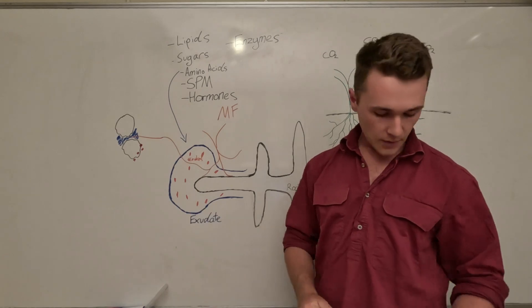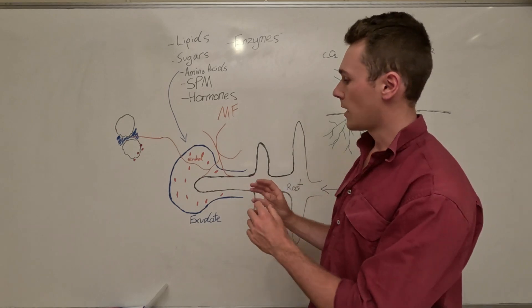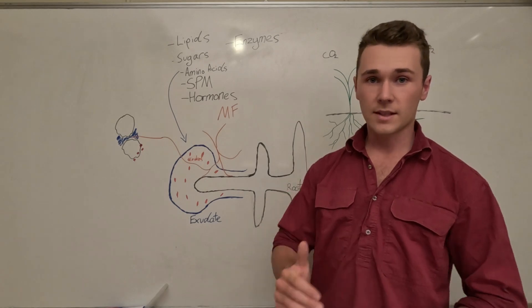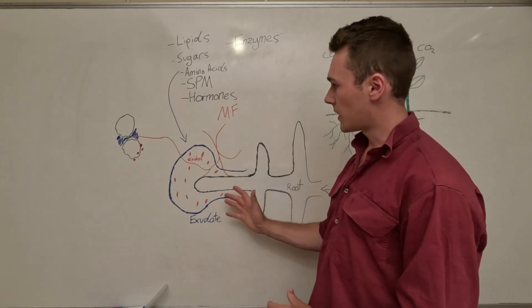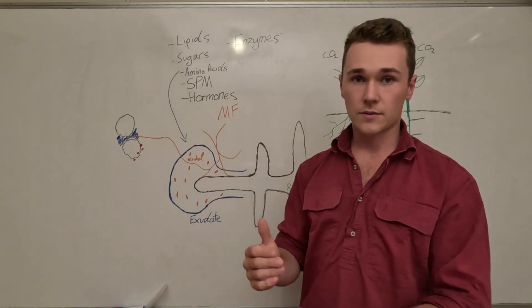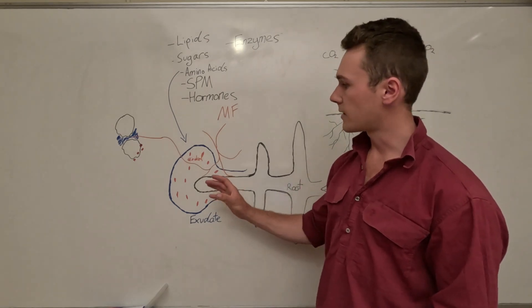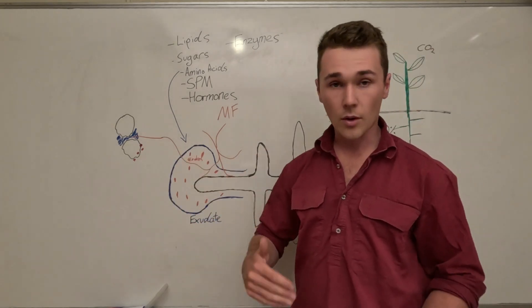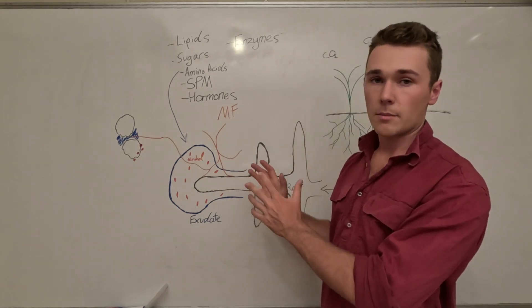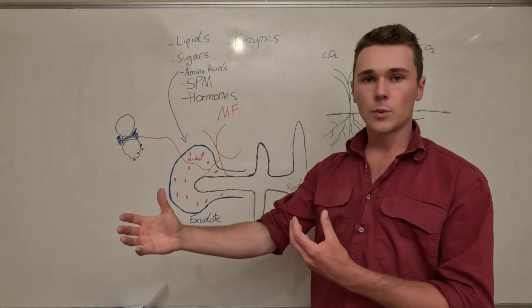That's effectively what root exudates are - just all these compounds, a lot of sugars, being pushed out the root tip into our soil. The reason why our plants are doing this is a super complex interaction between our microbes and our plants. There's a lot of benefits that our plants get from this interaction, but simply what it is is our microbes really benefit from this source of carbon. It's food for them, similar to us eating fruits and veggies. Root exudates are the food for microbes, or a lot of microbes at least.